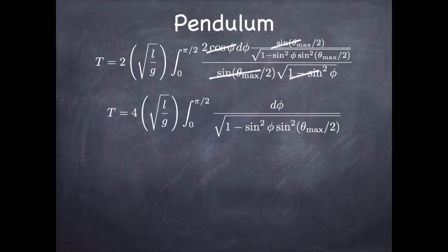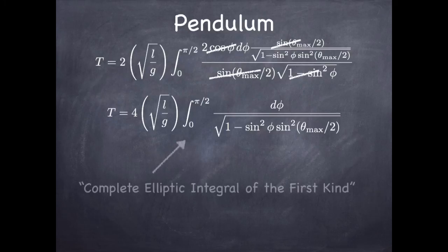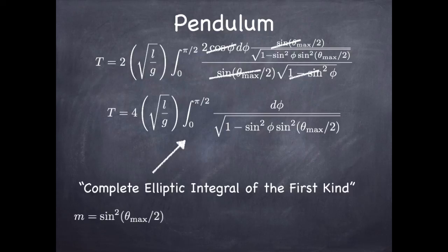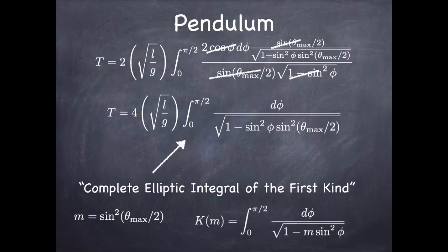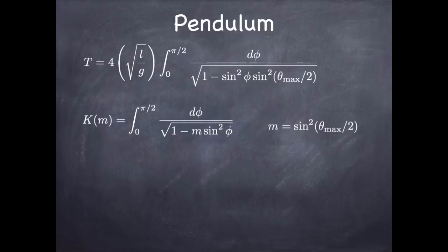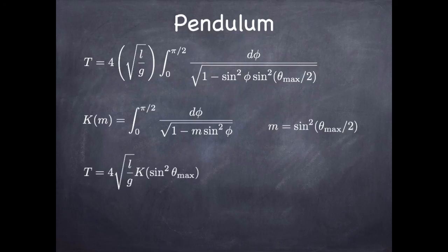Things simplify, and we end up with 4√(L/g) times the integral from 0 to π/2 of dφ / √(1 − sin²(θ_max/2)·sin²φ). That looks no easier than before — in fact it's impossible to do analytically. But this is a standard form called the complete elliptic integral of the first kind. We've transformed it into a standardized form. In conventional notation, sin²(θ_max/2) is called m, so this integral is written K(m), a function of the parameter m, and the period is 4√(L/g)·K(m).